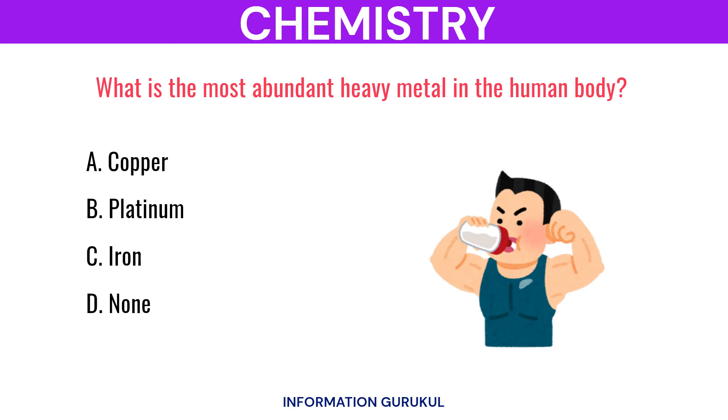What is the most abundant heavy metal in the human body? Iron.